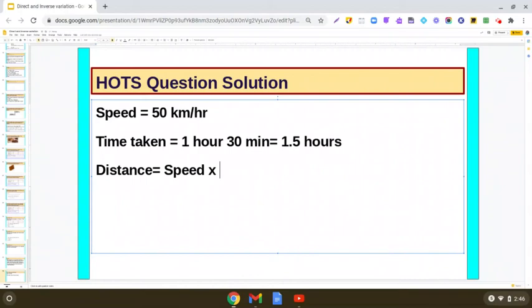And here you are given the speed of the car, that is 50 km per hour. Time taken is 1.5 hours. So 50 into 1.5 is 75. So distance between Ramit's home and office is 75 km. One thing is clear now.